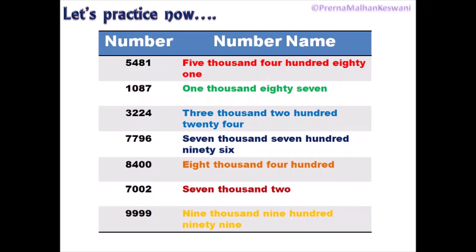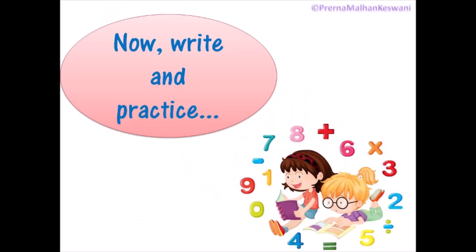And this number, 9,999, is the largest four-digit number. Now, with this, children, I have covered the topic of numbers and number names for four-digit numbers. It is your time to write and practice. All the best. See you later.